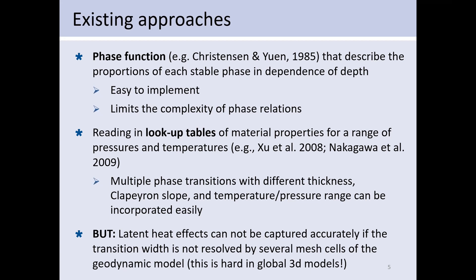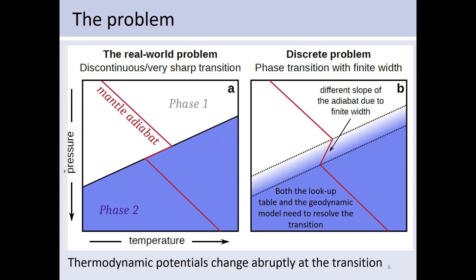However, both approaches have the disadvantage that latent heat effects cannot be captured accurately if the transition width is not resolved by at least several mesh cells. For global 3D models, the resolution is typically on the order of tens of kilometers, but some phase transitions are only hundreds of meters wide. This limits what kinds of phase transitions can be included in the model.